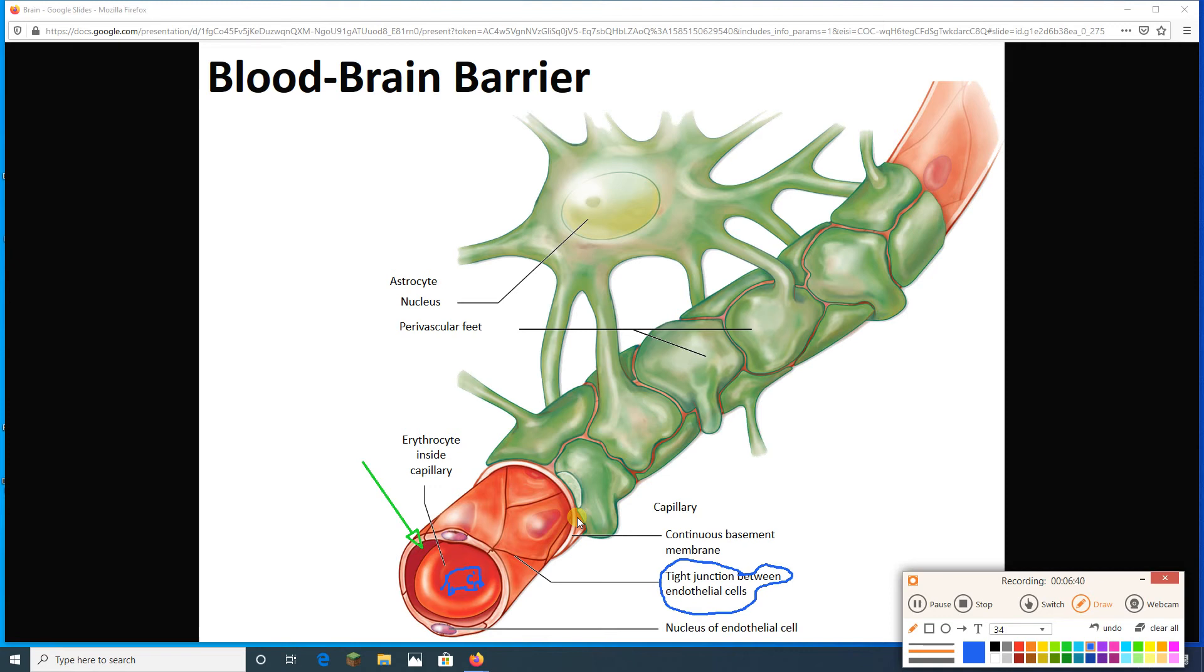But that's not all. Notice that I have an astrocyte up here. And my astrocyte sticks out these extensions, which then have these feet. And these feet wrap around the blood vessel. These feet are actually called perivascular feet because they go around the vessel. Peri-around-vascular-vessel.